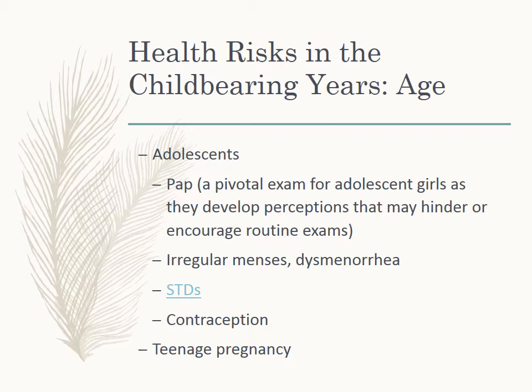Adolescents are at risk for STDs. We need to be talking to them about contraception and teenage pregnancy. A sexually active teen who does not use contraception has a 90% chance of pregnancy within the first year of beginning to be sexually active. Many teens do not seek prenatal care until they're in their second or third trimester due to lack of realization that they're pregnant, denial, being unsure where to go, or fear. They might be wanting to hide the pregnancy as long as possible.